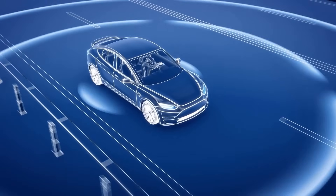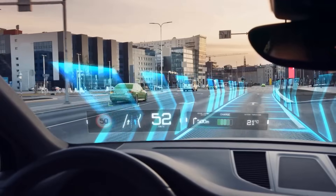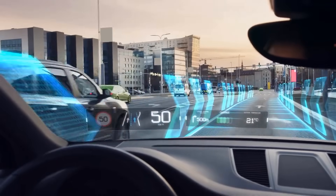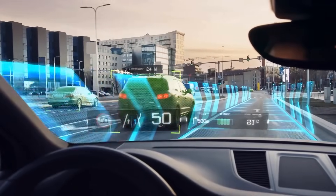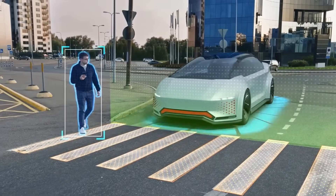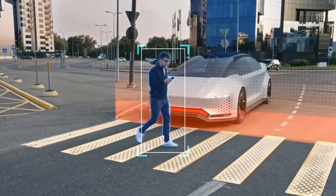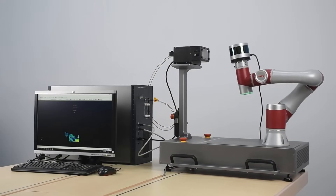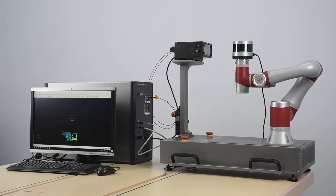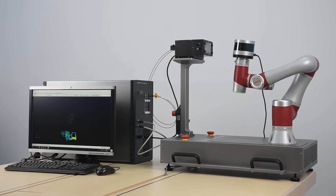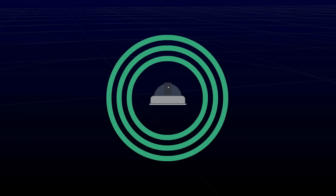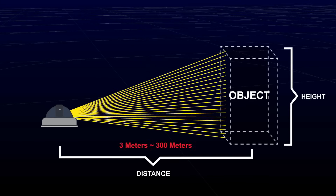Like radar and camera, LiDAR is another type of sensor for vehicles that acts as an eye and provides a 360-degree view of the surroundings. Keysight's LiDAR Target Simulator offers a safe, reliable, and accurate way to test LiDAR units. It has the capability to simulate distances from 3 meters up to 300 meters with different reflectivity levels such as retro, white, and black material within the desired field of view of the LiDAR device.